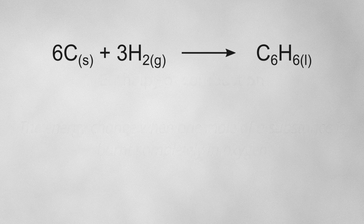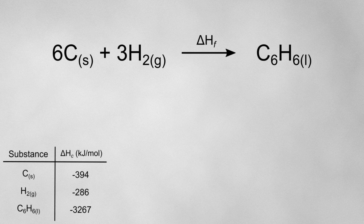Let's take a look at this reaction showing the formation of benzene. We could be asked to calculate the enthalpy change of formation for benzene with given enthalpies of combustion. We're being asked to calculate the enthalpy of formation for benzene, but we've been given enthalpies of combustion, so we'll set this Hess cycle up using combustion enthalpies.